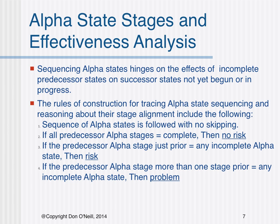The baseline alpha state stages used in the sequencing of alpha states by stage represent a risk-adverse baseline of expectation. A project wishing to make an explicit decision to depart from the baseline may choose to do so by constructing an ad hoc project baseline of alpha states, alpha state stages, and sequences. This departure from the preferred baseline is risk by design and may possess additional built-in risk. In any event, the basic rules of construction governing risk by performance still apply.